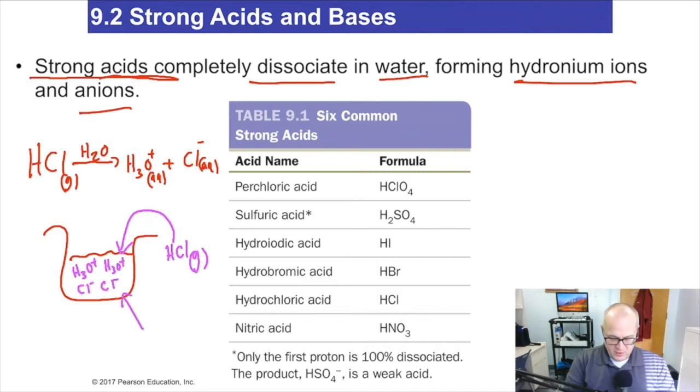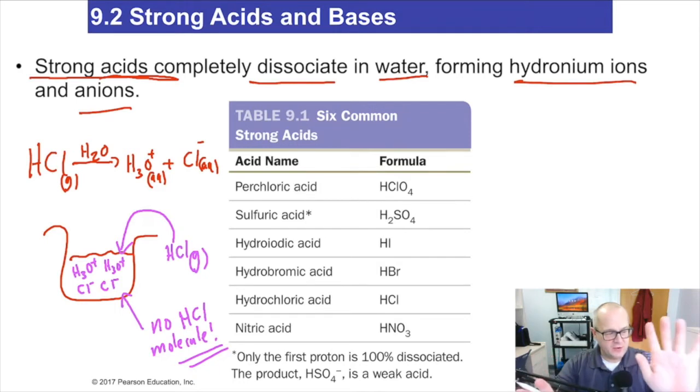But we would have no HCl molecule in solution. Why not? Because hydrochloric acid, HCl, is a strong acid. As soon as it hits water, it dissociates completely to give you hydronium and chloride. No hydrogen chloride molecule exists in water because it's a strong acid.